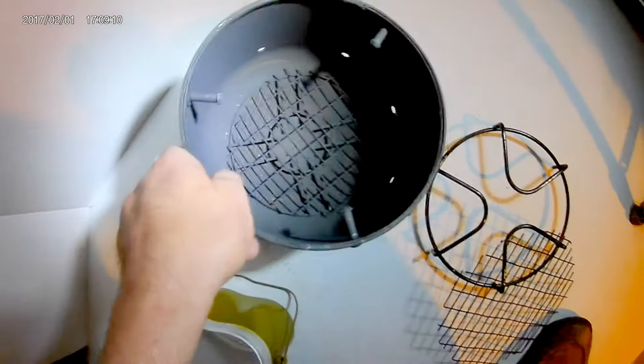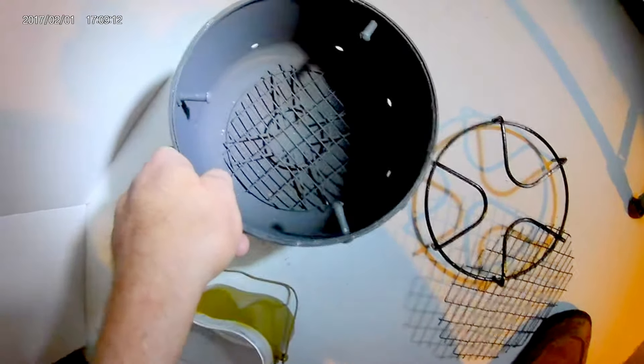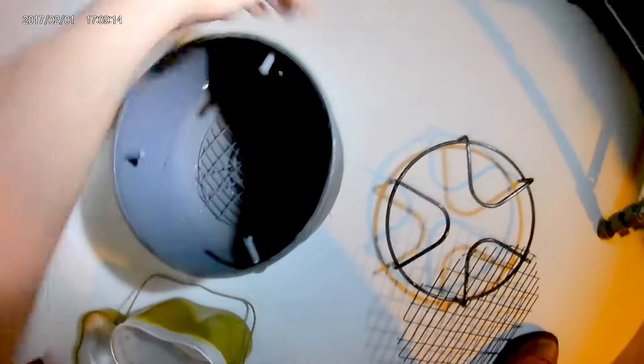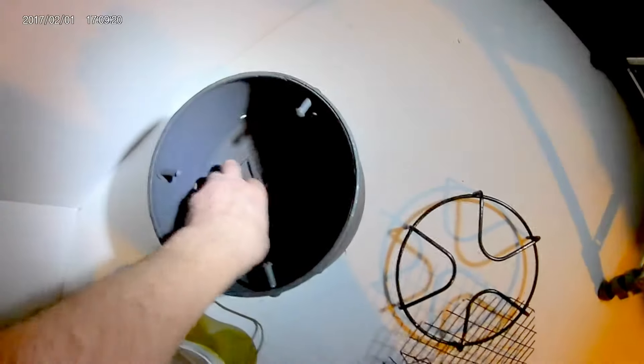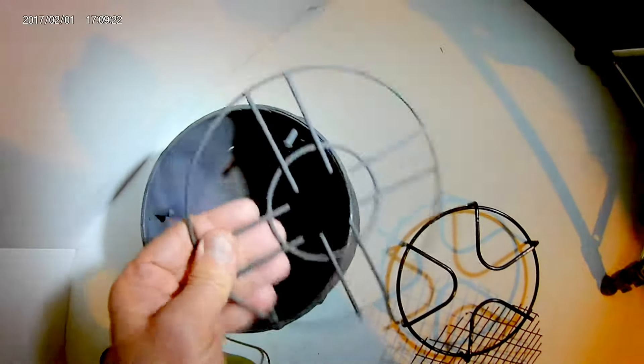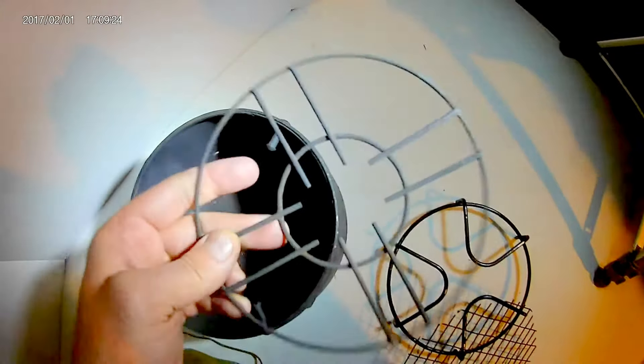And then inside is my under grate air grate so that you have airflow under the wood coming from these holes on the side I showed you. There's two of these cut to fit and then another underlying grate also cut from an old grill rack.